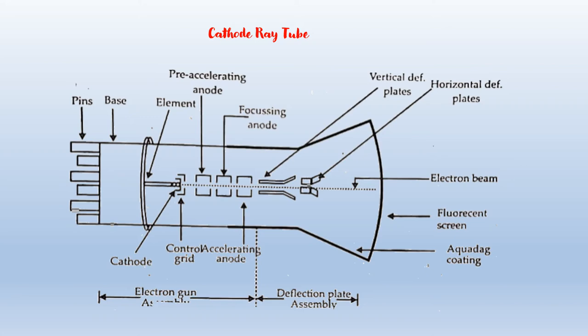Cathode Ray Tube (CRT): This is the diagram of the cathode ray tube. The main parts of the cathode ray tube are the electron gun assembly, deflection plate assembly, fluorescent screen, and glass envelope and base of the tube. CRT is also known as the heart of the CRO. The electron gun assembly produces a narrow and sharply focused beam of electrons which travels with very high velocity towards the fluorescent screen. On its way, the beam passes through two pairs of deflection plates. On striking the screen, the beam produces a small light spot.